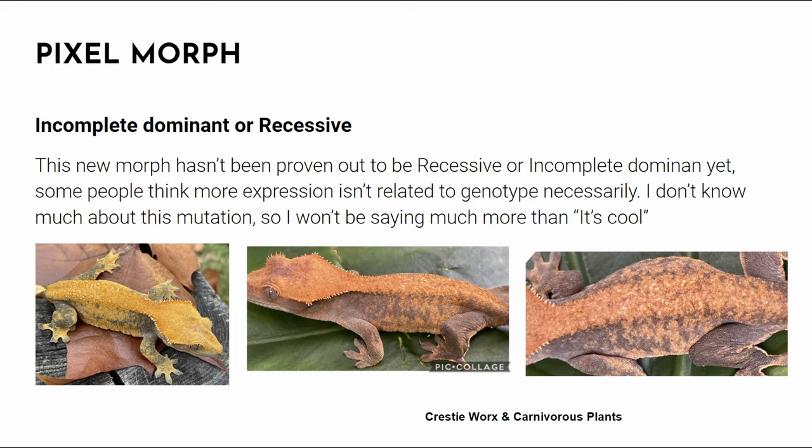I want to add that I know of the pixel morph but am not including it in this video because I am not 100% sure how it works. Some think it's incomplete dominant with a super form; others think it's recessive and the apparent super form is just variable expression. Since I don't work with pixels and have never seen one, I'll leave it to people who have pixels to discover whether this trait is incomplete dominant, recessive, or something else.